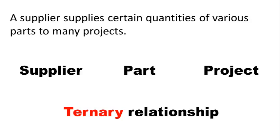When you are talking about an instance of this relationship — for example, supplier A supplied part X to project 1 and supplied 300 units — you need to mention all three entity types, all three instances, in order to complete the picture. If you leave out any one instance, the picture is incomplete. So the event that occurred connected all three entity types, and such a relationship is called a ternary relationship.